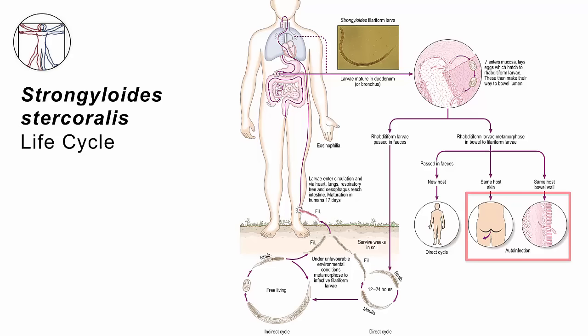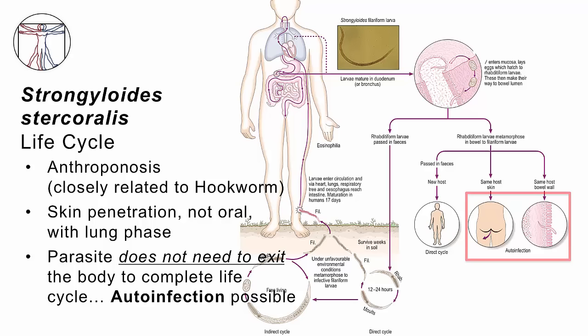Strongyloides is fascinating — it doesn't even really need people. We hypothesize that there is a free-living cycle in the soil, but eventually these worms seem to want to be nourished on human flesh, so people probably are required for this infection. It is an anthroponosis, closely related to the human hookworm. Again, skin penetration, not oral. It does have a lung phase. This parasite is different — it does not need to exit the body to complete its life cycle. That's called auto-infection.